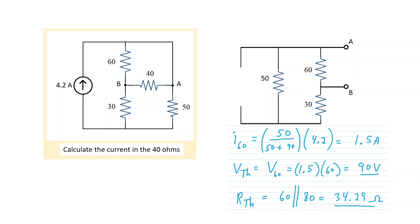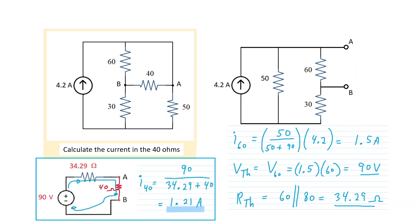For the Thevenin resistance with a constant current source, we open circuit that current source. Looking at points A and B, the 30 is in series with the 50, making 80, and the 80 is in parallel with the 60, giving 34.29 ohms. Bringing in that Thevenin circuit with the 40 ohm output included, the current in the 40 ohms is 90 volts over the series resistance of 34.29 plus 40 — giving 1.21 amps.